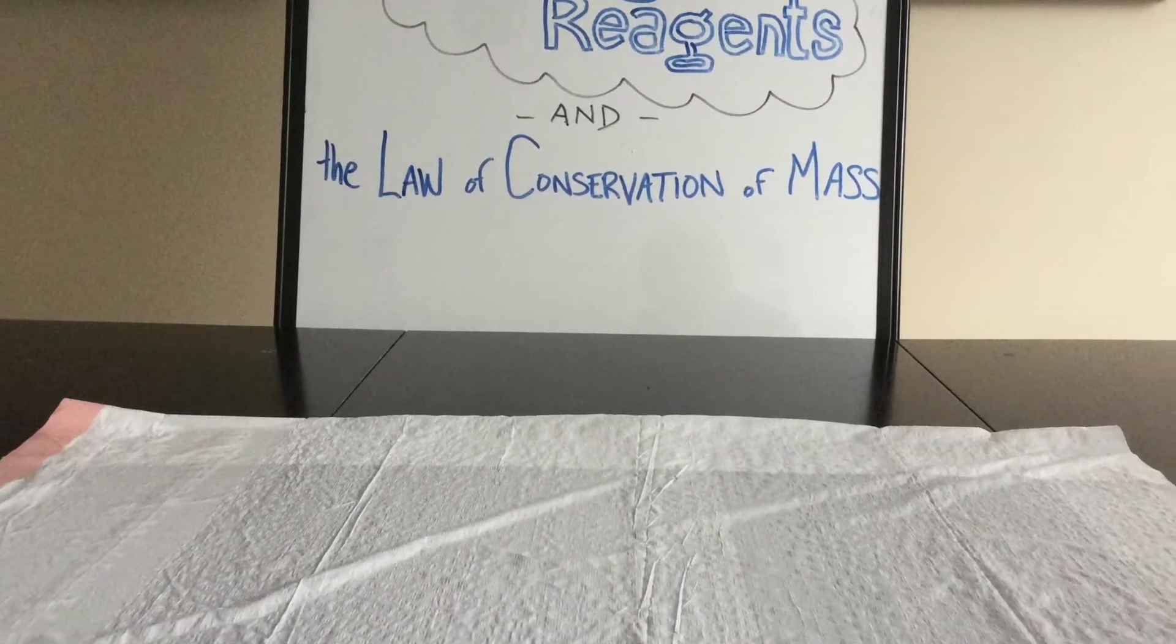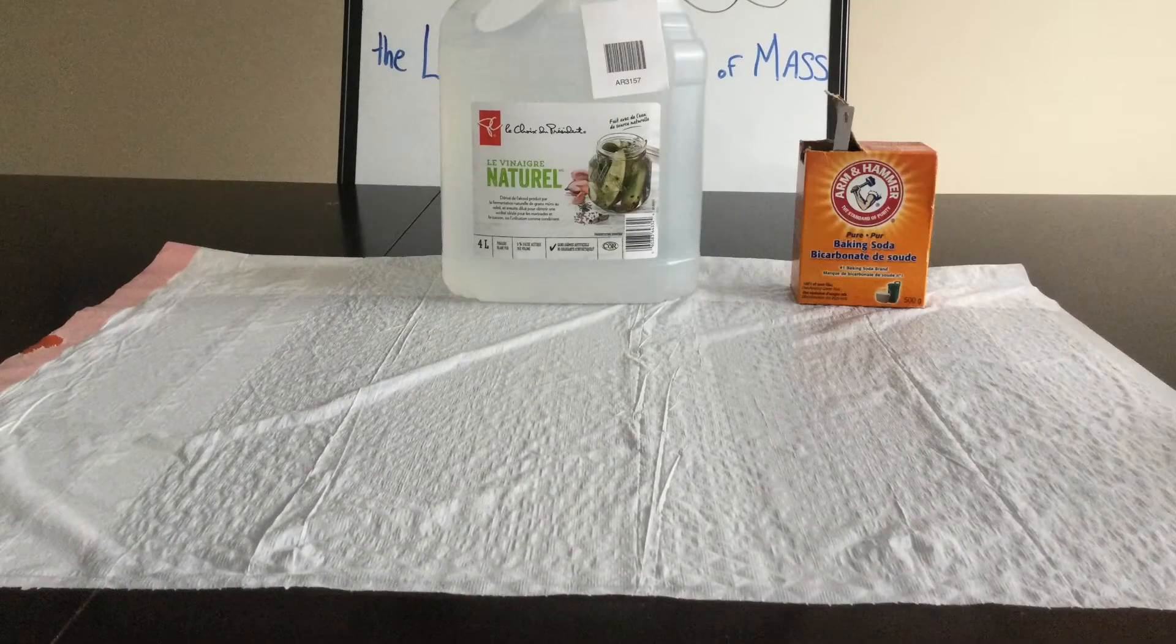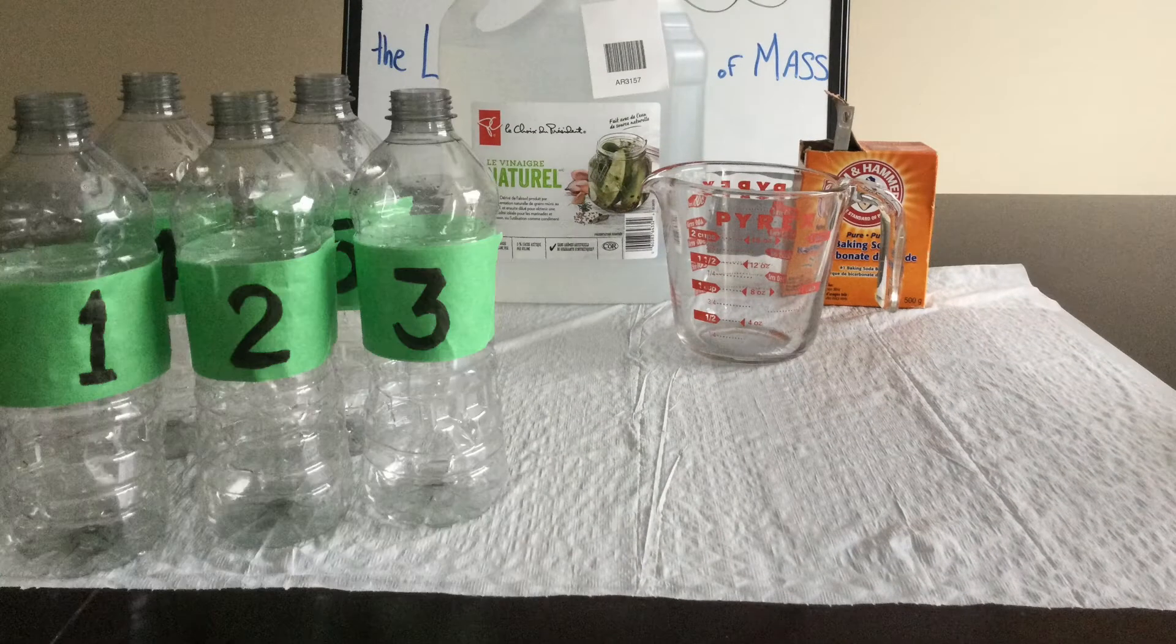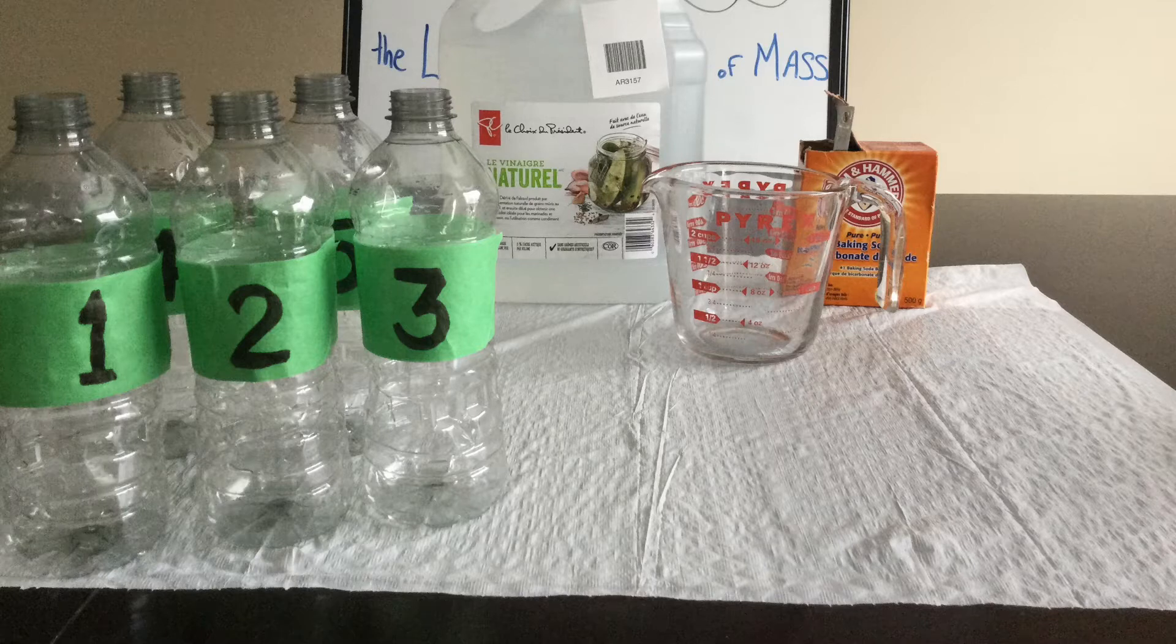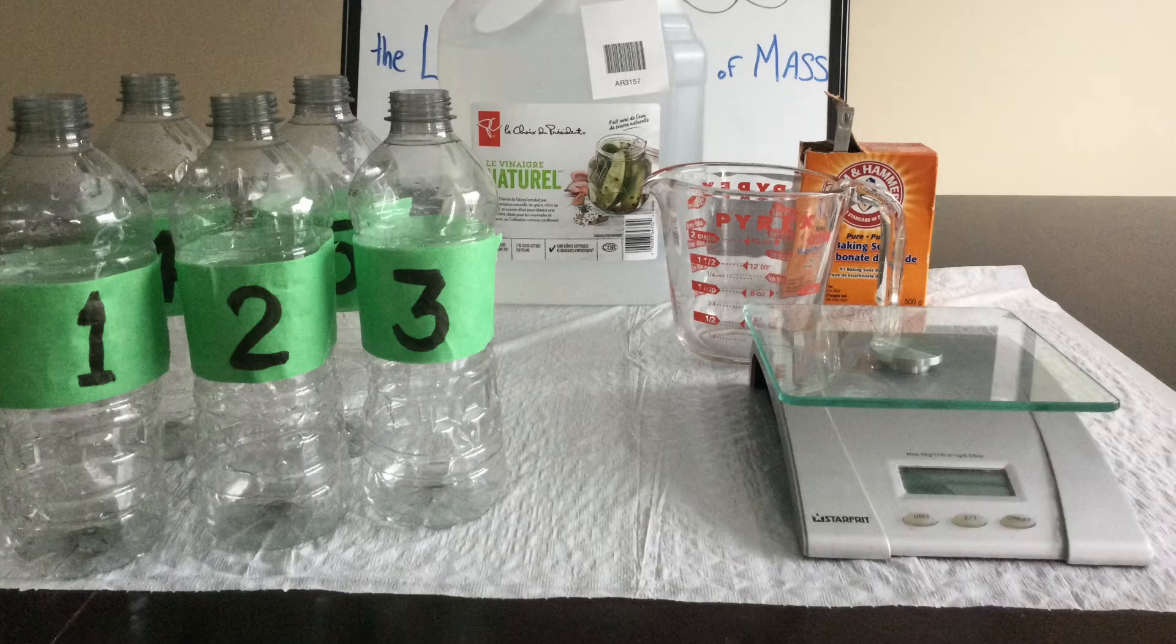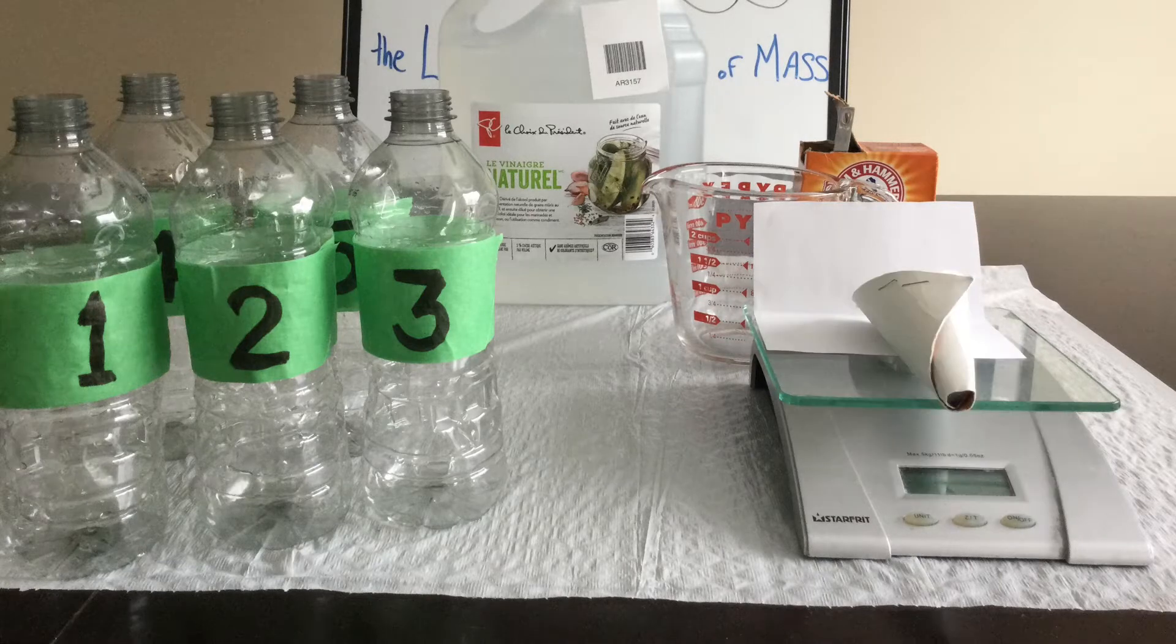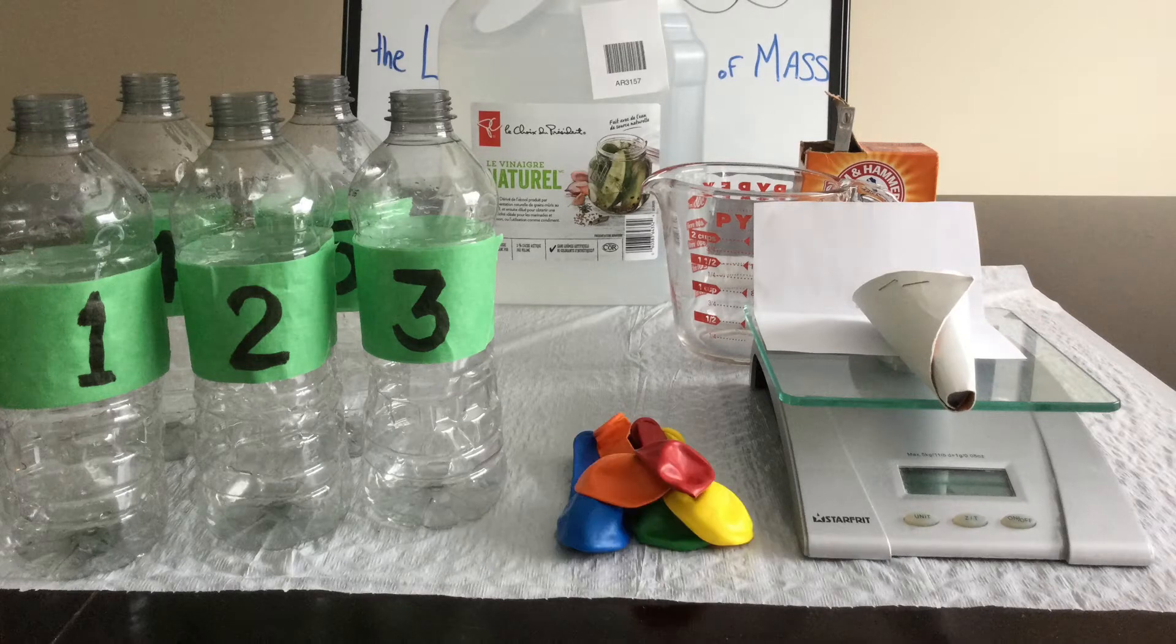To do this experiment, we need to gather a few things first. Here we go. Vinegar, baking soda, a measuring cup, a funnel, five 500 milliliter plastic water bottles. We're also going to need an electronic balance and a piece of paper folded in half on top of the balance. We need a small funnel. I had to make one out of a piece of cardboard. We need the funnel so that we can pour baking soda into these balloons.